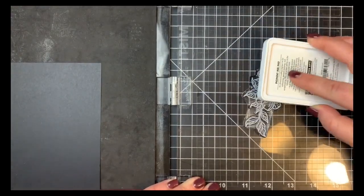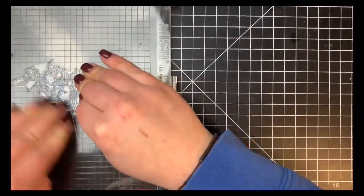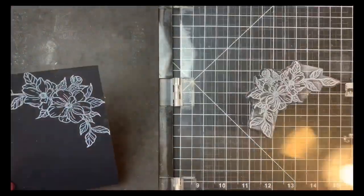This is Hero Arts Unicorn White and you just want to dab on your ink for a pigment pad. You don't want to really smush it on there or else you're going to get ink everywhere.